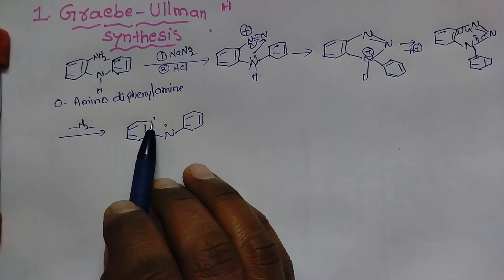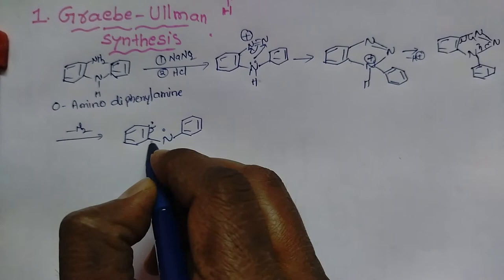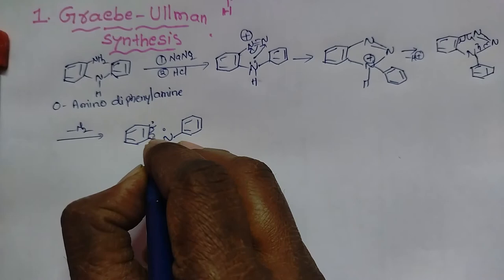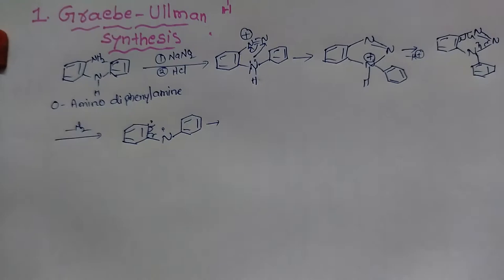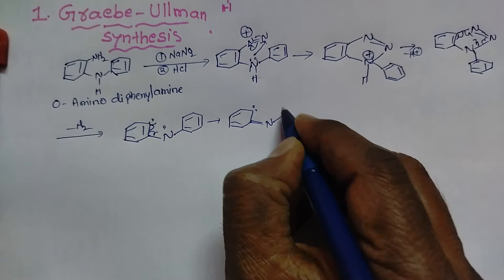This is a biradical — one electron is present on the carbon of the benzene ring and the other electron is present on the nitrogen. Now this C-N bond undergoes homolytic cleavage. One electron shifts and the second electron forms a double bond, and this carbon becomes a carbene.